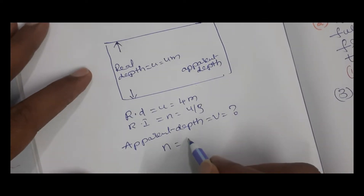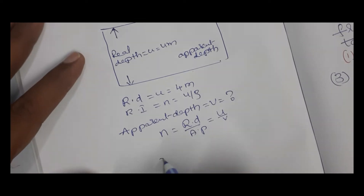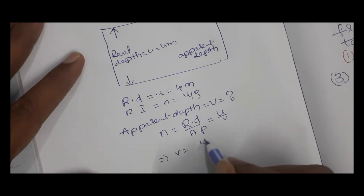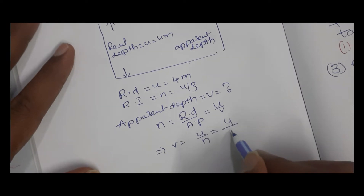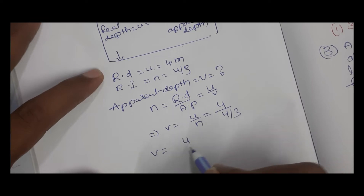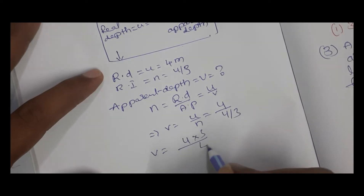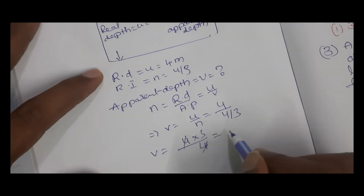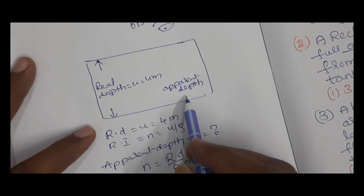This implies V = U / n. U = 4, n = 4/3. So V = 4 ÷ (4/3) = 4 × (3/4) = 3 meters. The bottom of the tank appears to be at a depth of 3 meters. That is the option.